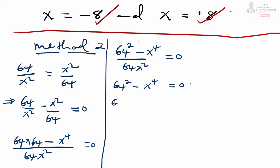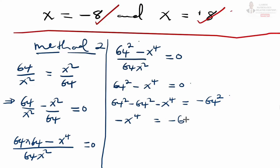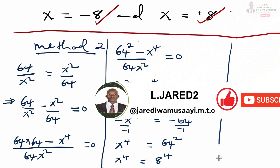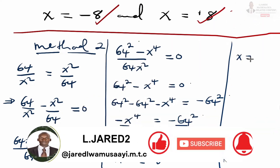As we simplify, we have 64 squared minus x to the power 4 equals 0, so negative x to the power 4 equals negative 64 squared. Dividing both sides by negative 1, we get x raised to power 4 equals 64 squared, which is the same as x raised to power 4 equals 8 raised to power 4. Therefore, as before, x equals positive or minus 8.